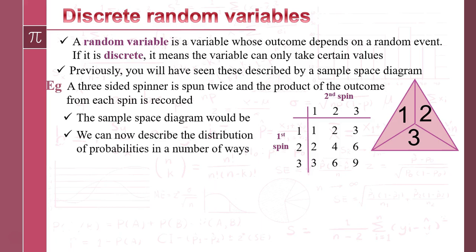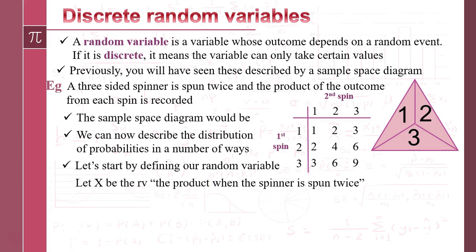We're going to describe this as a distribution in a slightly different way. I'm going to start off by defining what our random variable is going to be. Our random variable, I'm going to call it capital X — the random variable is the products when a spinner is spun twice. So now we need to think about what values can our random variable take.